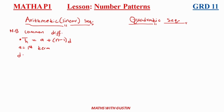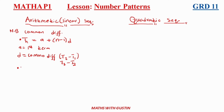'd' refers to the common difference in that pattern. You get it by saying T2 minus T1, or T3 minus T2. And 'n' in this formula refers to the number of terms in that pattern.